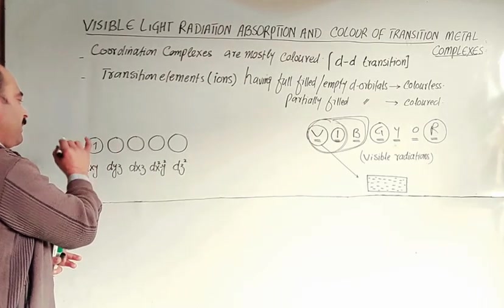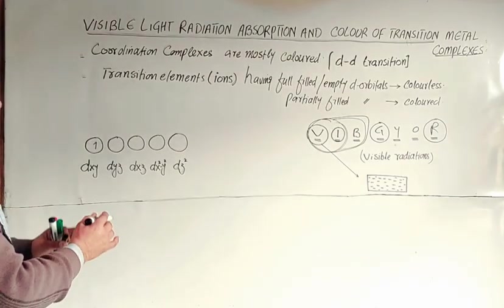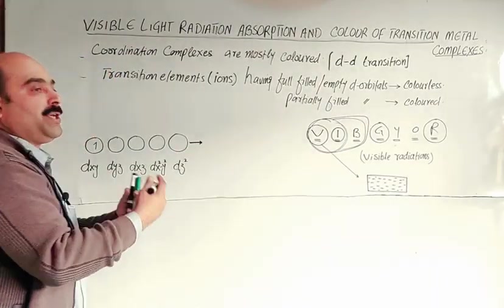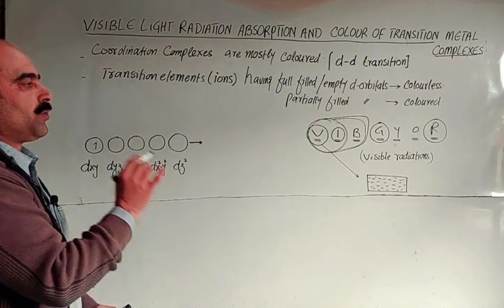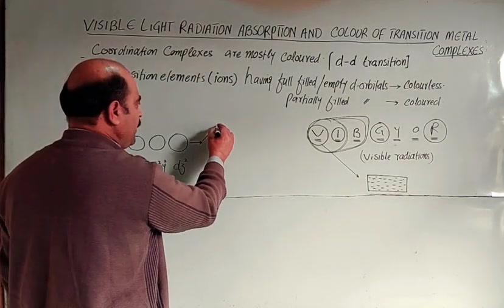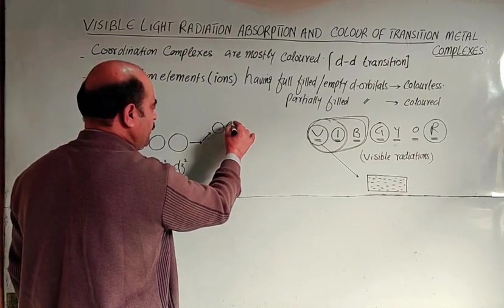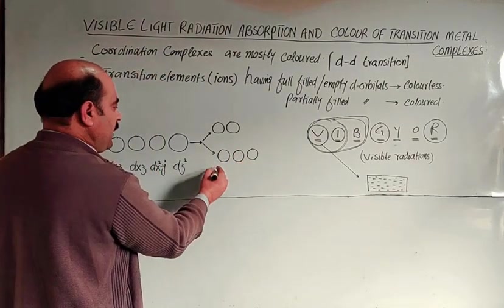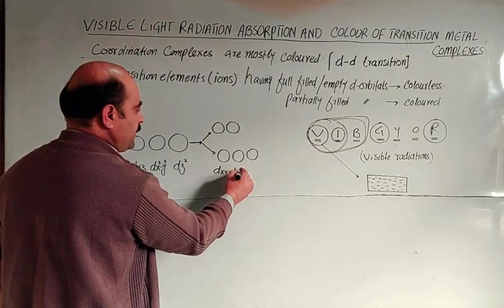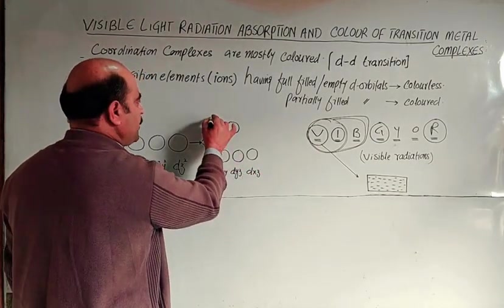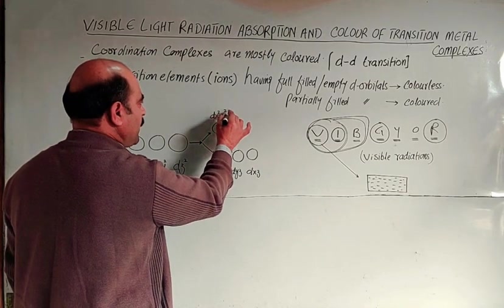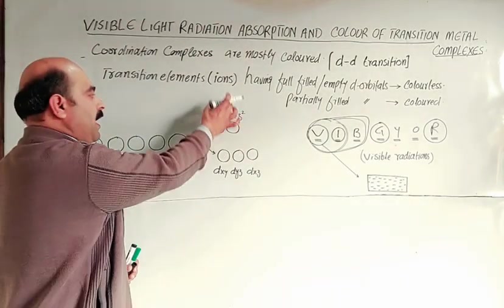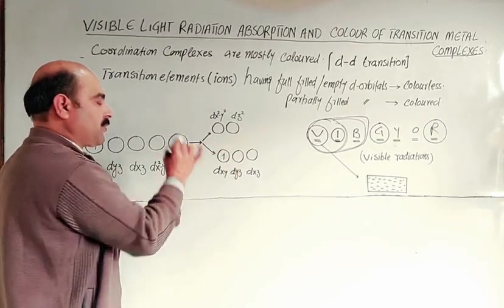These d-orbitals, when electrons are present, normally have the same energy. When energy is absorbed, like in chemical reactions or compound formation, they split into two groups. Two orbitals have high energy and three have low energy. The arrangement is: DXY, DYZ, DXZ at lower energy, and DX square minus Y square and DZ square at higher energy. The d-orbitals split into two groups where two have high energy and the remaining three have lower energy, with electrons present.